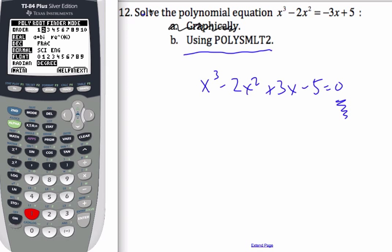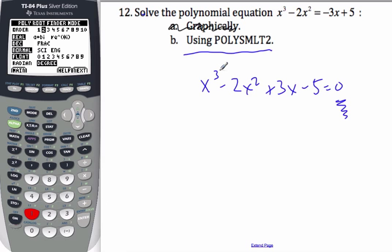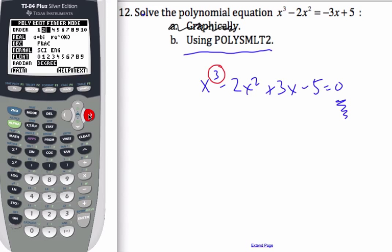For the order, to find the order, I take the highest degree of this polynomial. So this is a 3. They're all nice integer exponents on the x, so that means it's a polynomial. I know it's going to be a 3. Change my order to 3.